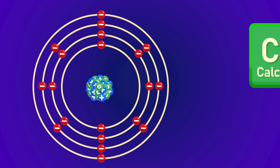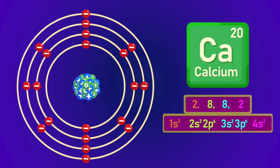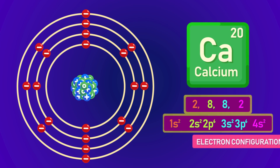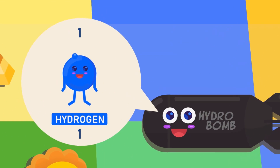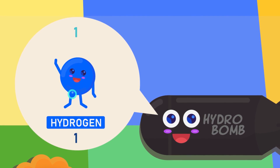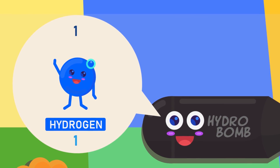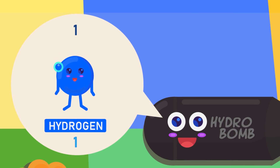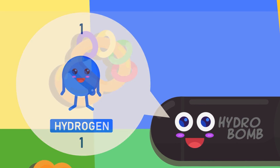The arrangement of electrons in an atom can be represented using a diagram called electron structure, or the electron configuration. For example, the hydrogen element has a proton number of one, also known as atomic number, and hence has one electron in total. This means it can only fill the first shell with one electron.